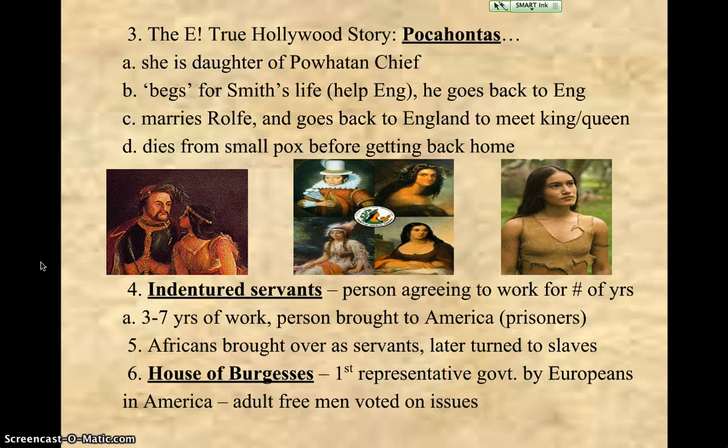In Virginia, now that it's growing as a colony, the first representative form of government by Europeans in America is formed. It's called the House of Burgesses, where if you were an adult free man who owned land, you got to vote on issues. So it's sort of a take on modern-day democracy.